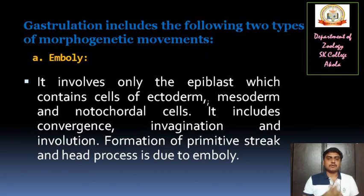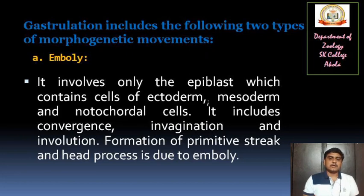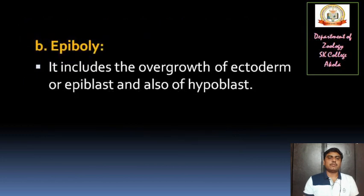What comes in emboly we will discuss. It involves only the epiblast, which contains cells of ectoderm, mesoderm, and notochordal cells. It includes convergence, invagination, and involution. The formation of primitive streak and head process is due to the emboly process.